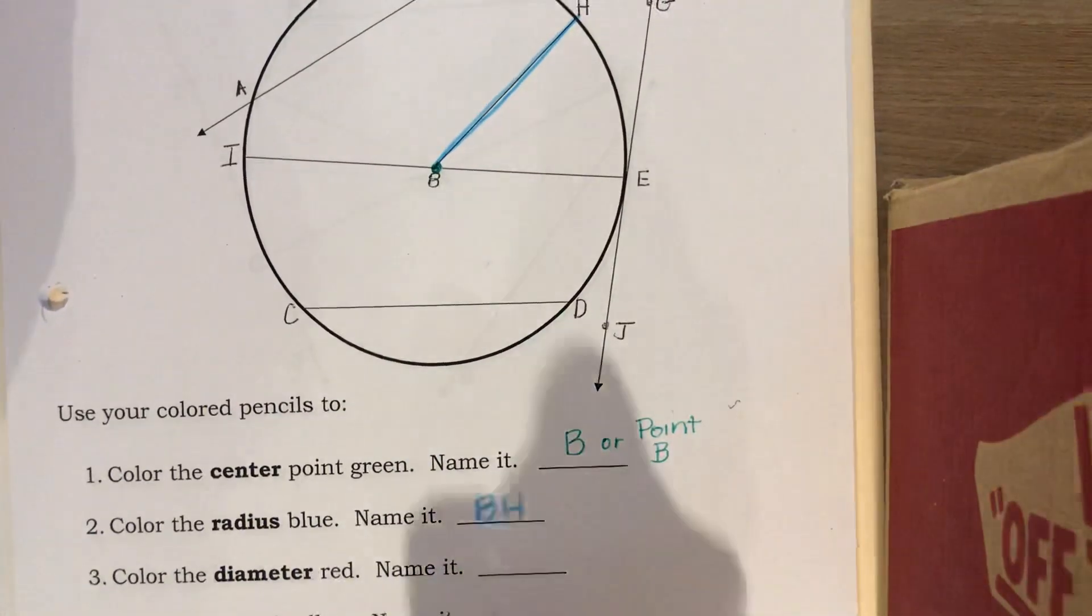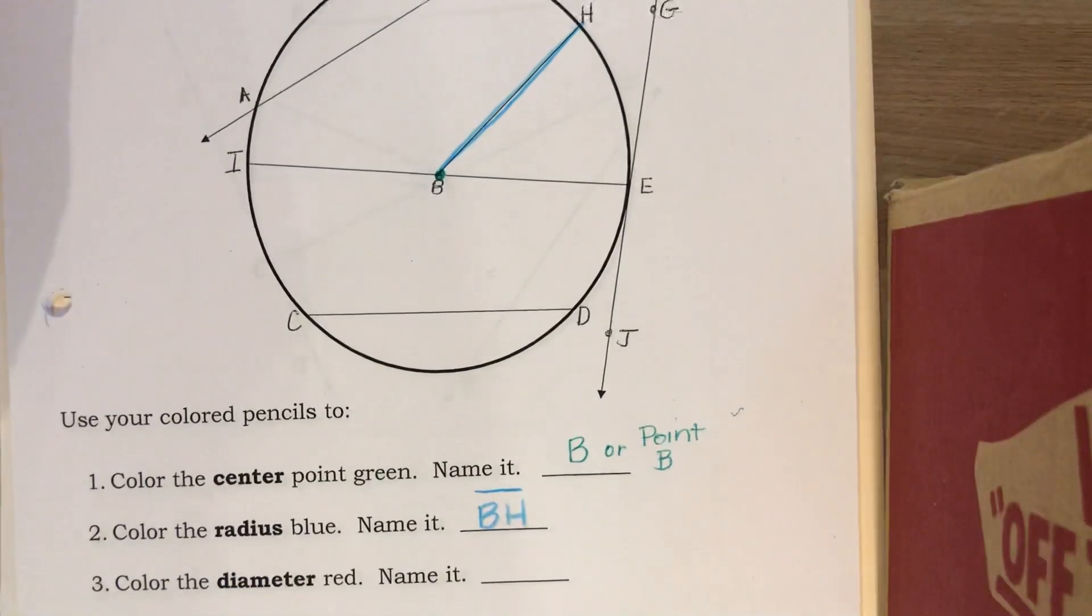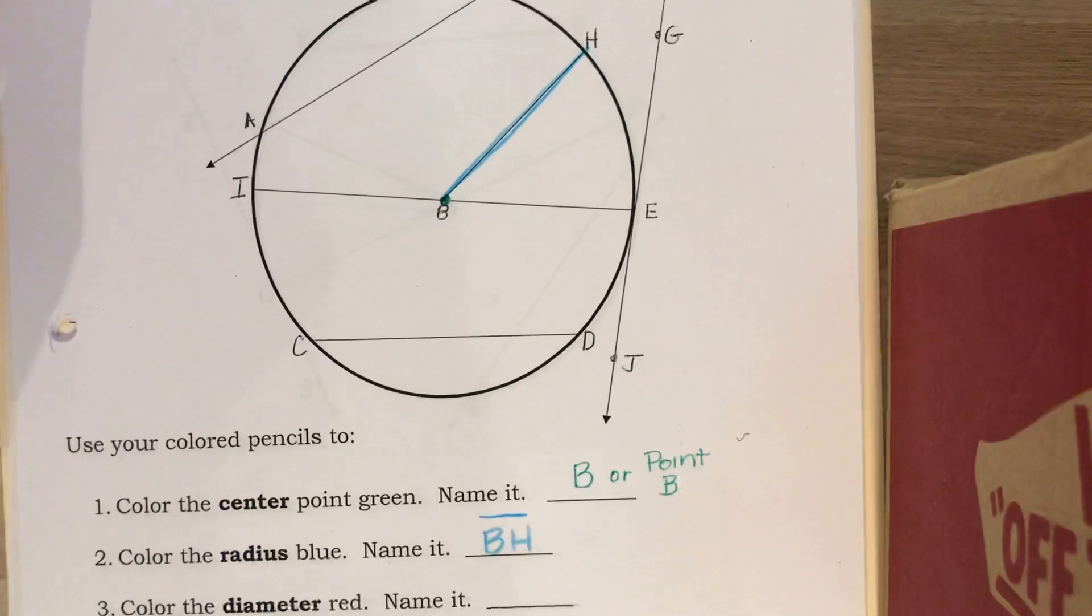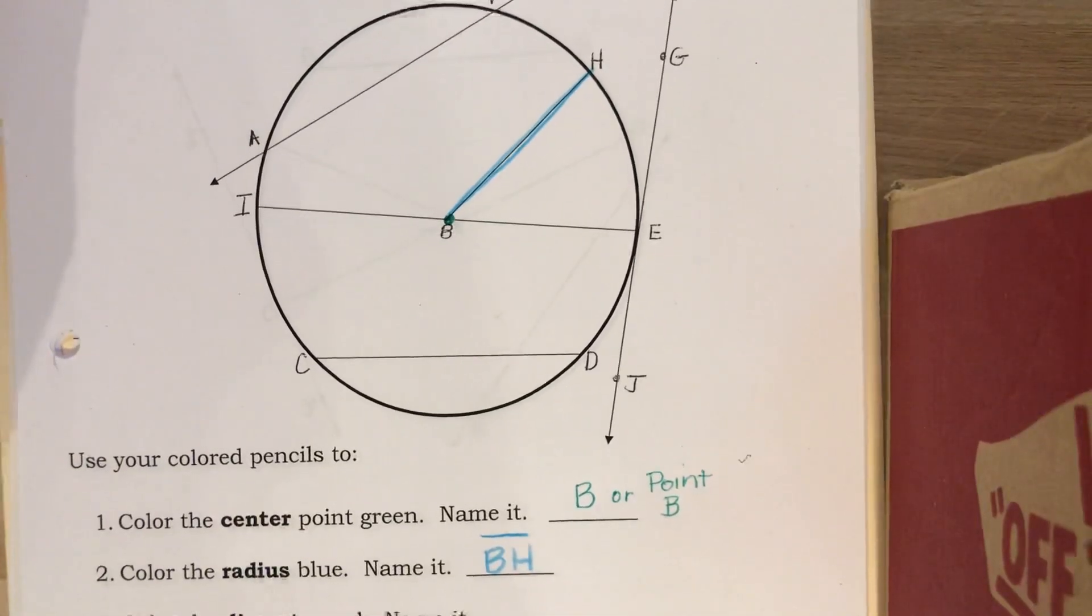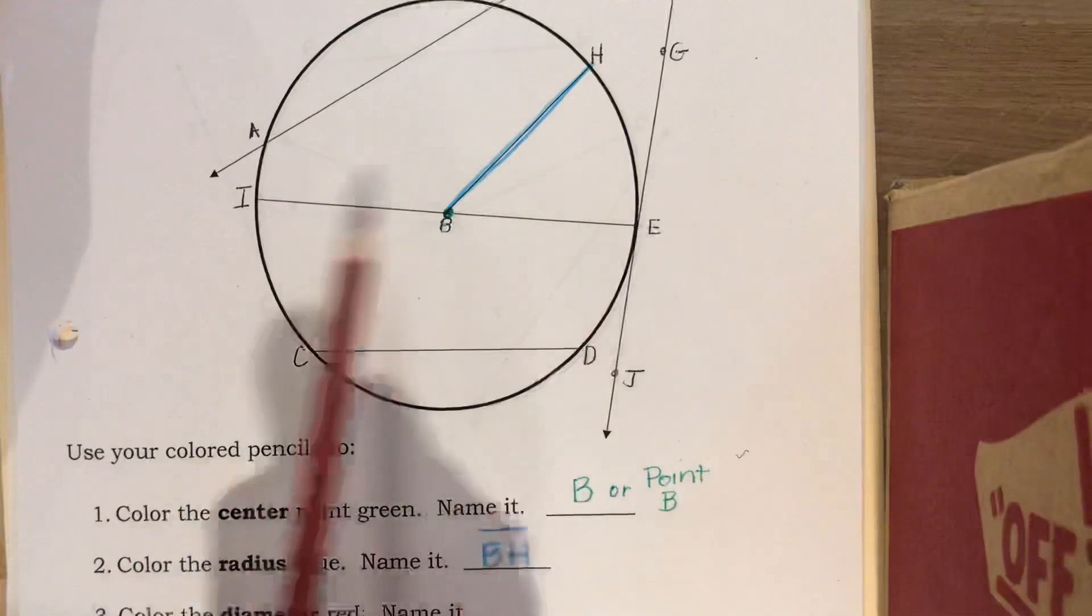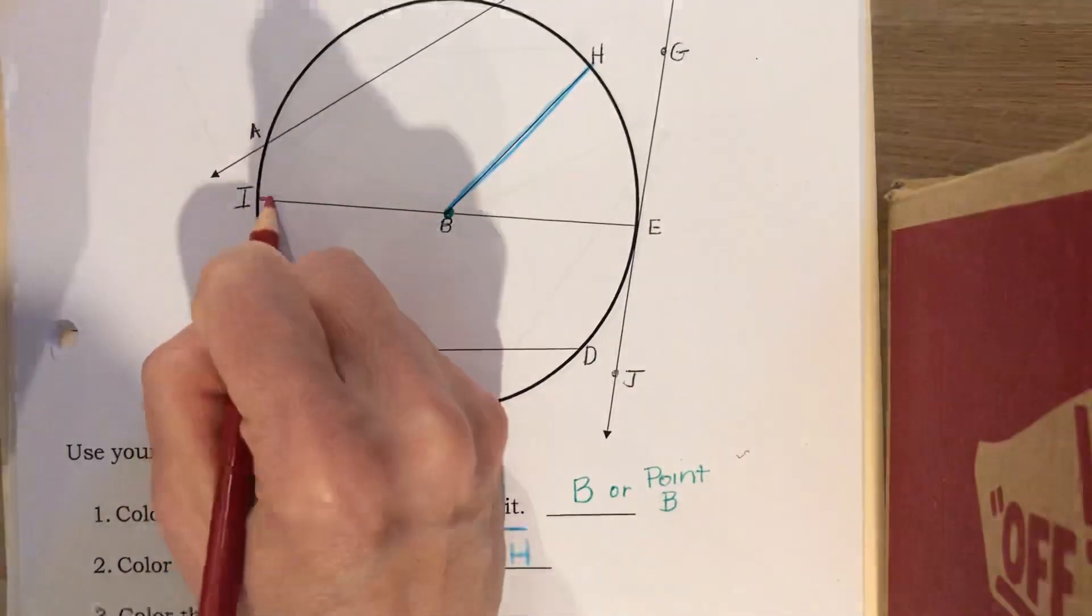A radius is a segment, so make sure that you have the segment bar on top. Next is a diameter. You'll see why I chose BH as my radius because your diameter is a segment that has to go all the way across through the circle through the center point. That would leave IE to be my diameter. Let's trace that in red. Name it IE with a segment bar on top.